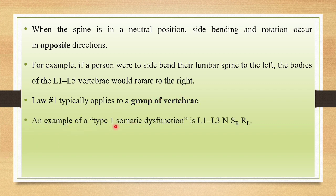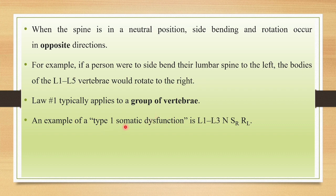An example of a Type 1 somatic dysfunction: L1 to L3 spine is in neutral with side flexion towards the right and rotation towards the left. This first law is mainly observed in Type 1 somatic dysfunctions, where more than one vertebra is out of alignment and cannot be returned to neutral by flexion or extension. In Type 1 dysfunction, multiple vertebral segments are involved, whereas in Type 2 dysfunction, only a single vertebra will have malalignment or dysfunction.